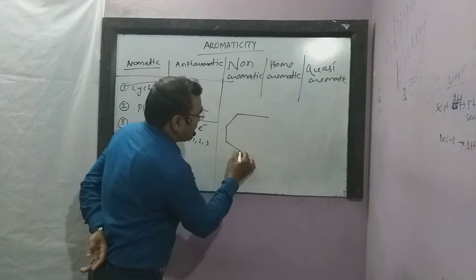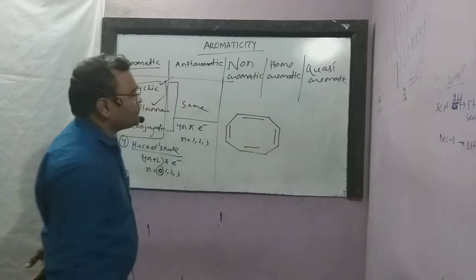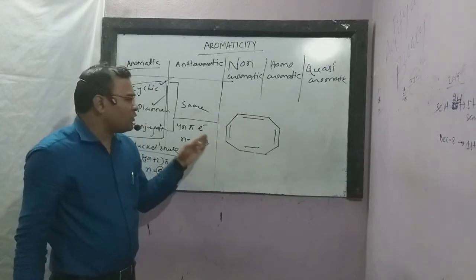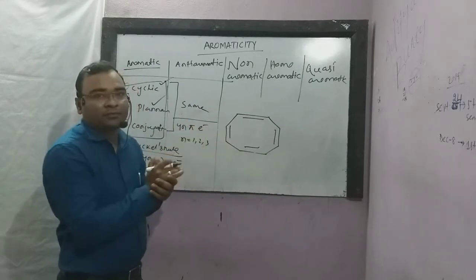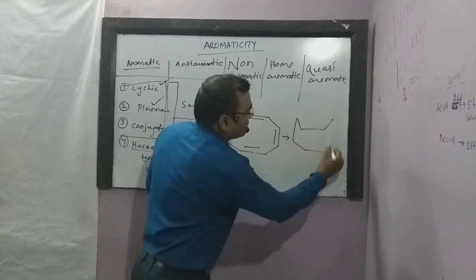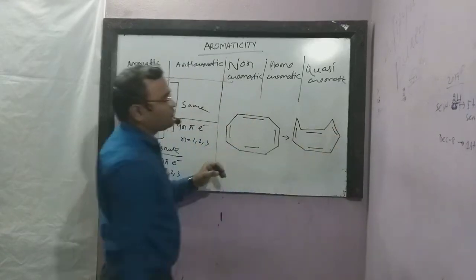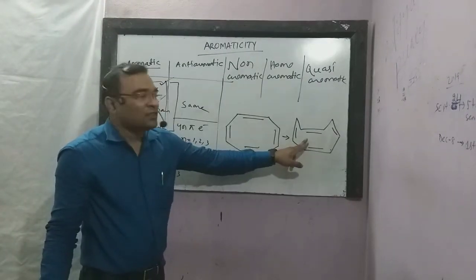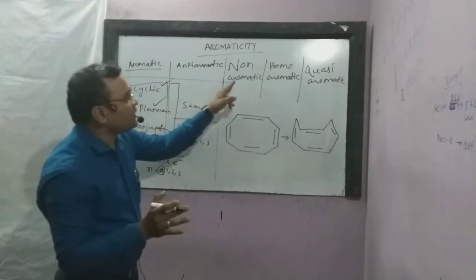Let's take an example: cyclo-octa-tetra-ene, or COT. It's cyclic, planar, and has conjugation. If you apply 4n, n equals 2, giving 8 pi electrons, so it should be anti-aromatic. But what is the actual problem? It's not planar. Since it's not planar, it's neither aromatic nor anti-aromatic. If you don't satisfy one condition, then this compound is non-aromatic.